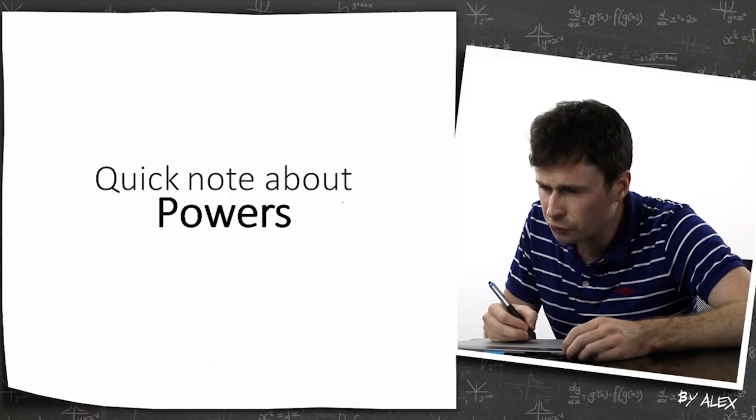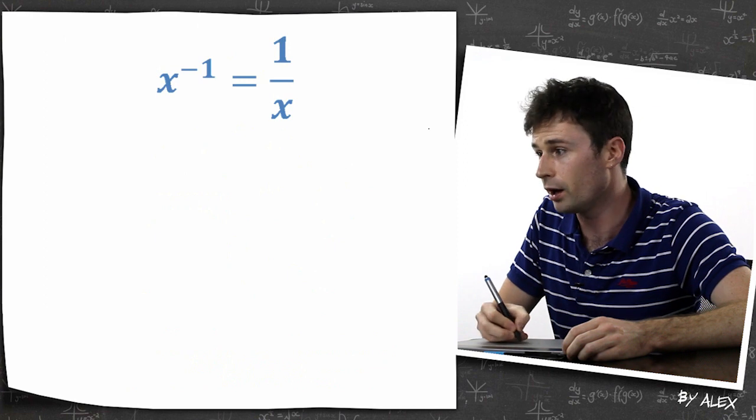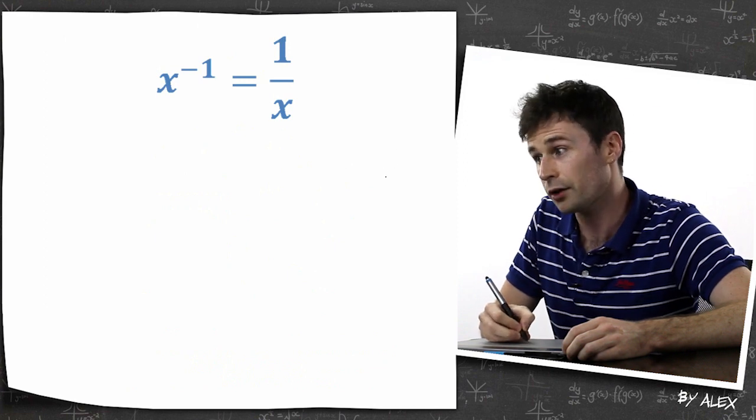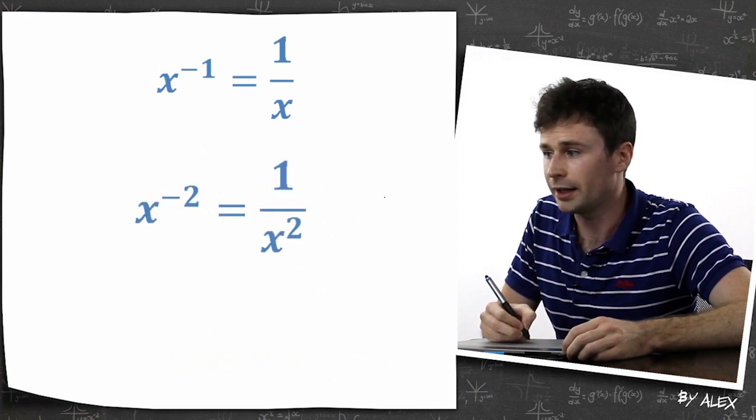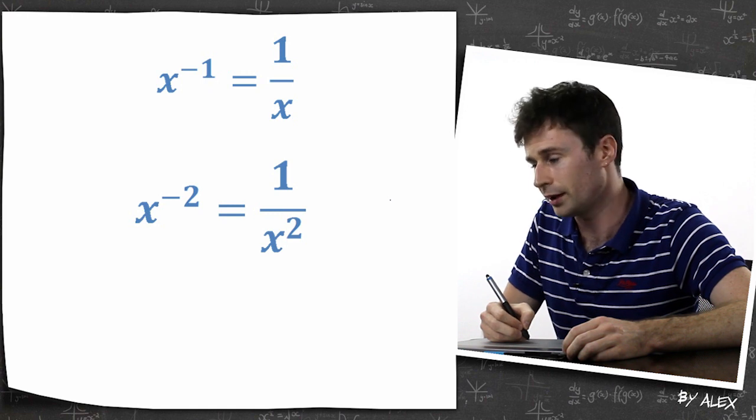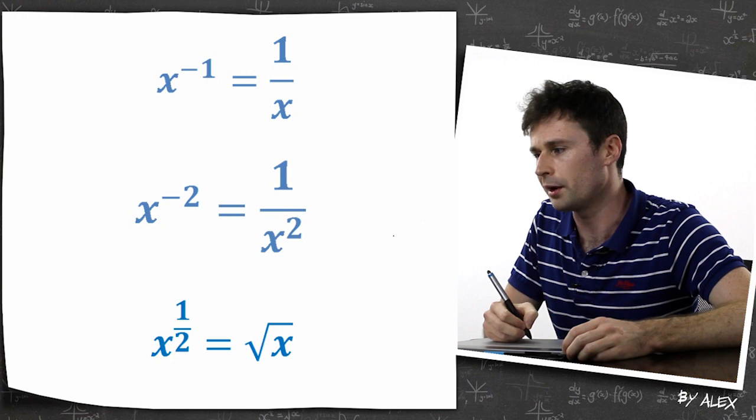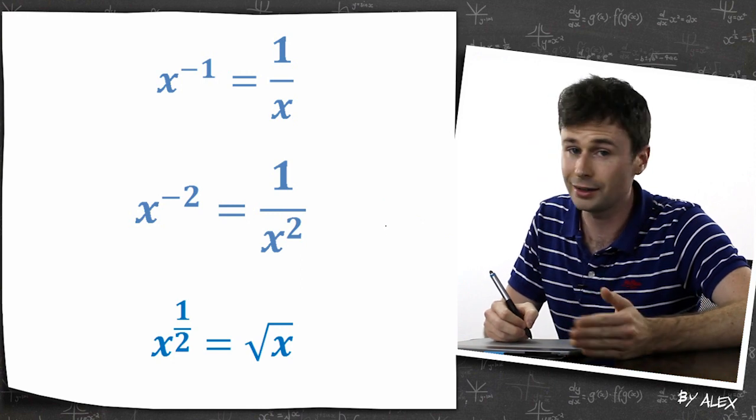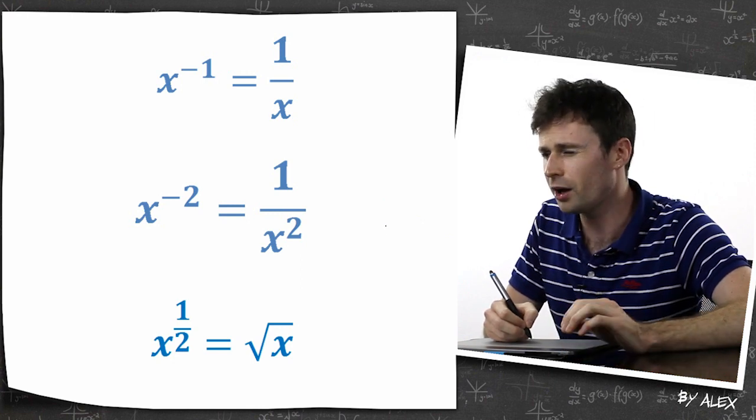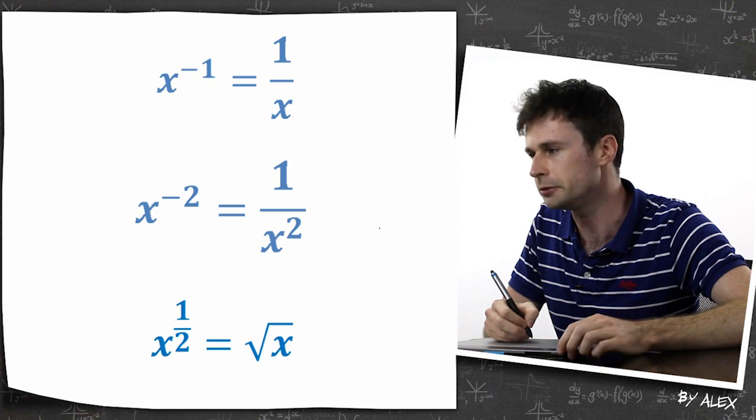And a quick note about powers. So if you've got x to the power of negative one, that just means one on x, right? If you've got x to the power of negative two, that means one on x squared. And if you've got x to the power of half, that equals the square root of x. I will go into this a little bit later in the power section, but for the time being, if you can just sort of get this, you'll be chill.